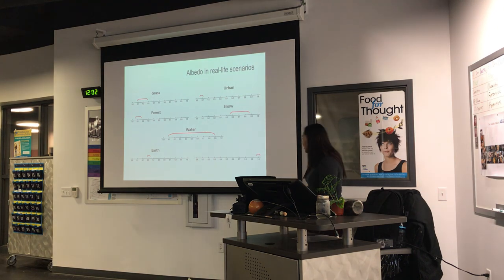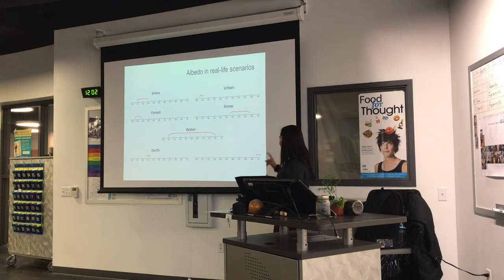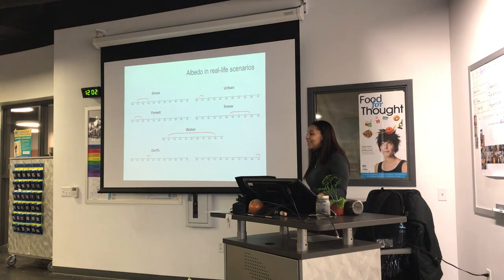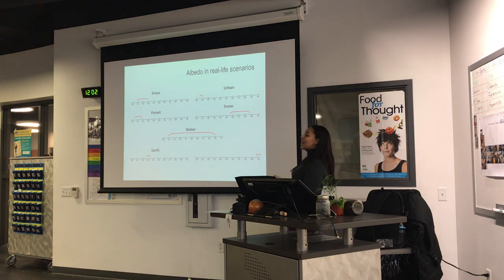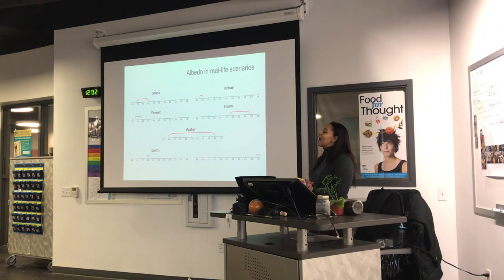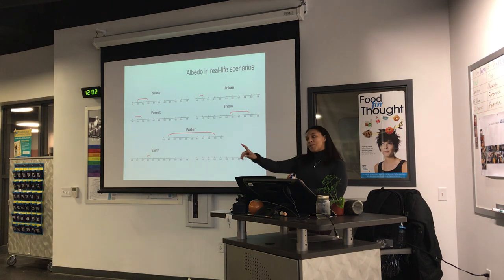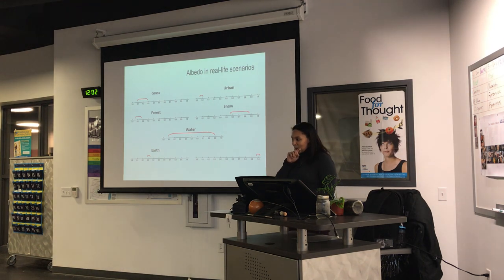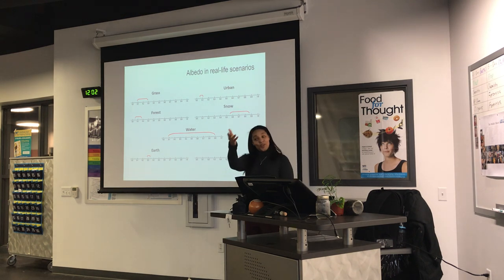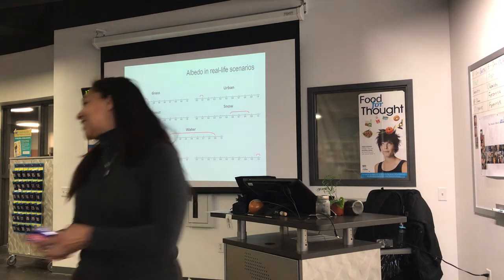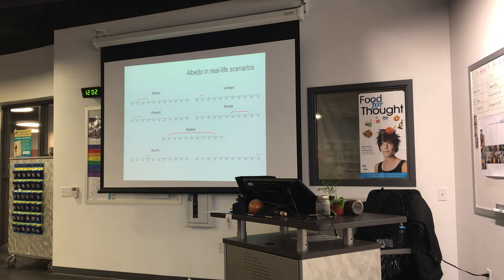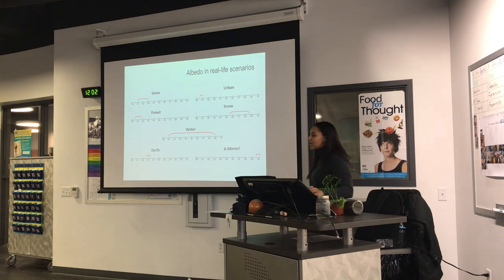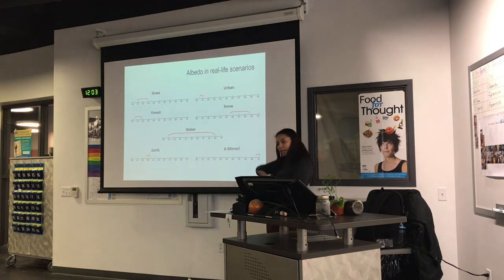The hardest question: what gives an albedo of exactly one? We know snow is about 0.85, but what is exactly one? A student guessed solar panels — but metal actually absorbs a lot of radiation. Another student guessed a mirror — correct! When we think about space mirrors or satellites, they have a mirror that takes all the radiation and immediately bounces it off. So a perfect mirror would have an albedo of exactly one.